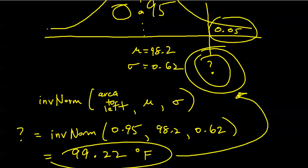That is the cutoff — if your temperature is higher than 99.2°F, you'll need further testing. This is logically equivalent to what we did in 6.2, but with the new twist of adding means and standard deviations into previously used commands for non-standard situations. That concludes section 6.3, Applications of Normal Distributions.